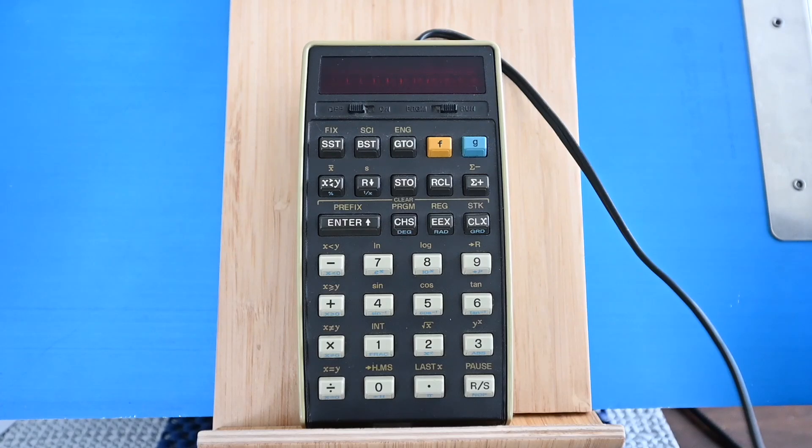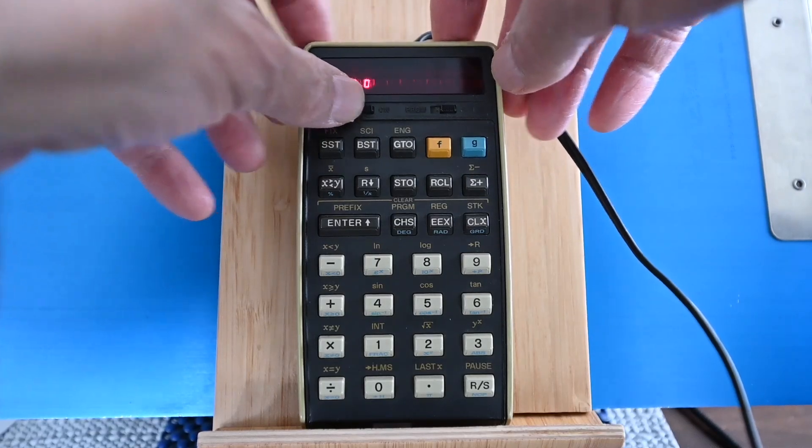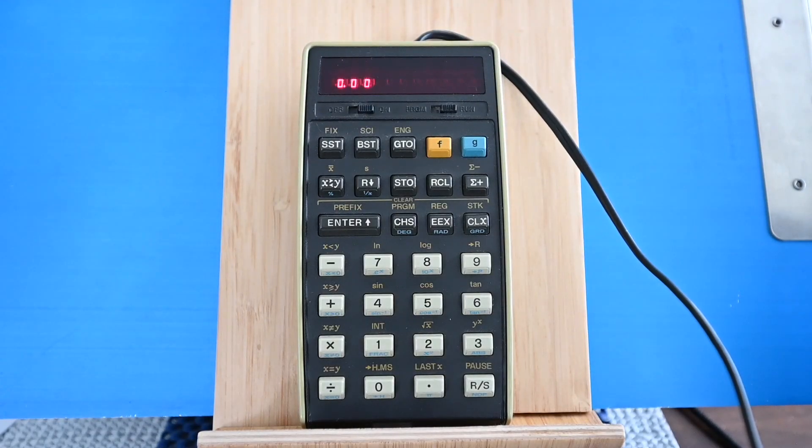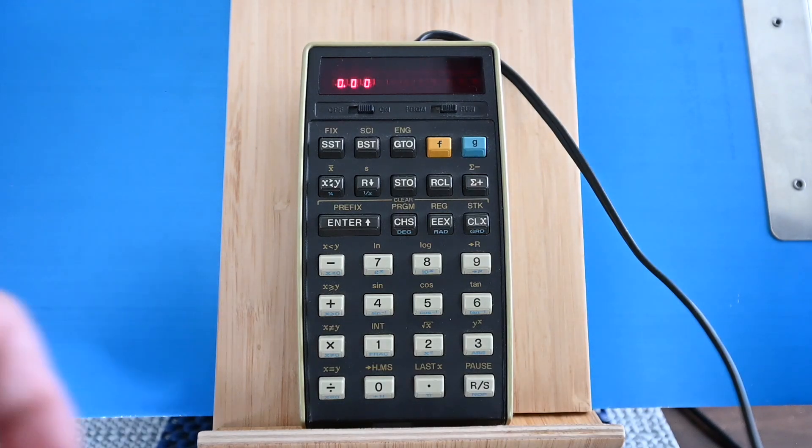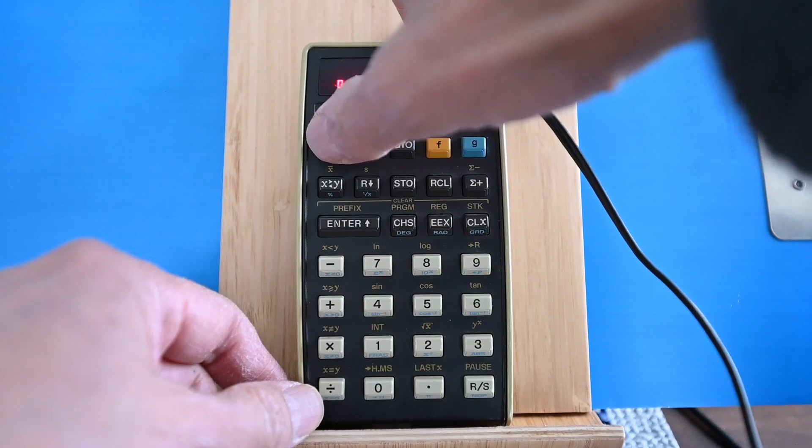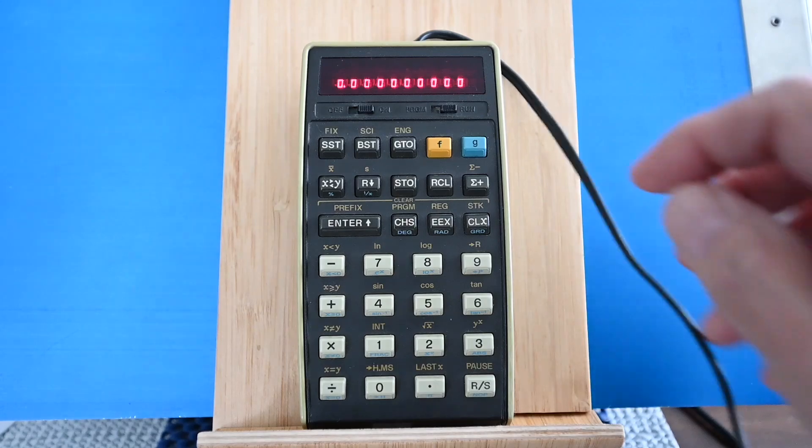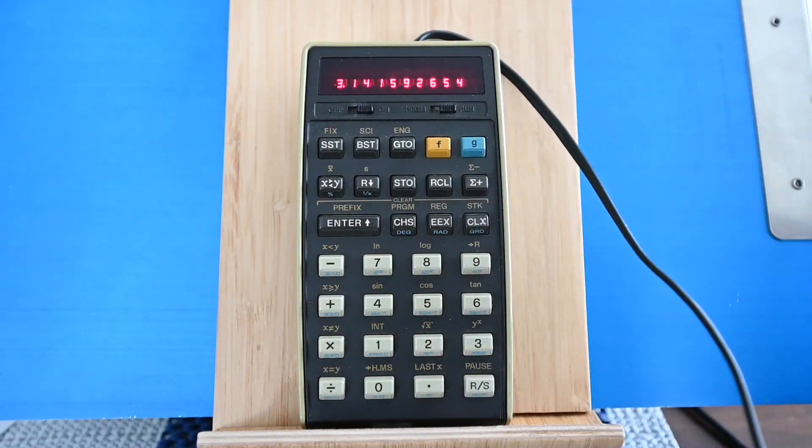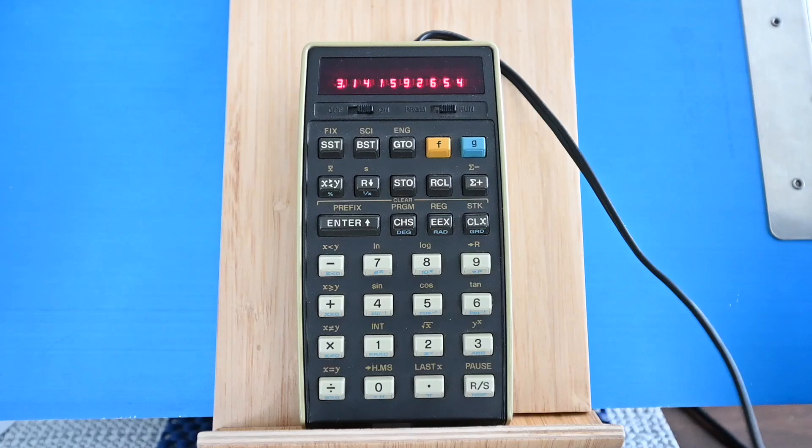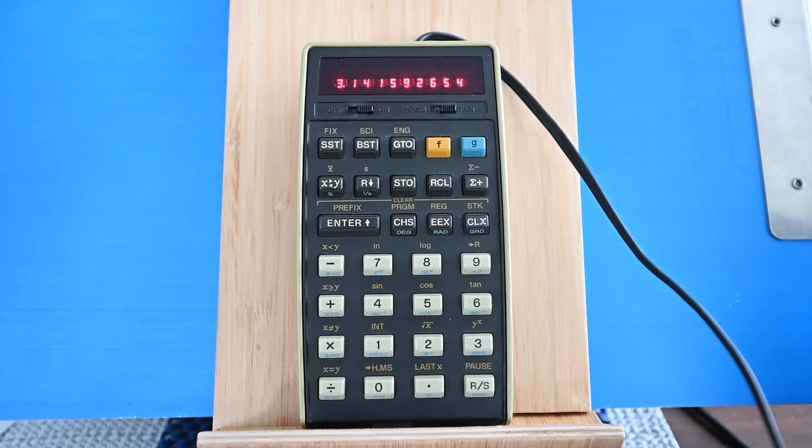And so this is an RPN calculator, reverse Polish notation. Let me turn it on. There you go, it's on. And let me set it for nine digits of display. And let's pull up a number like pi. And so still works.